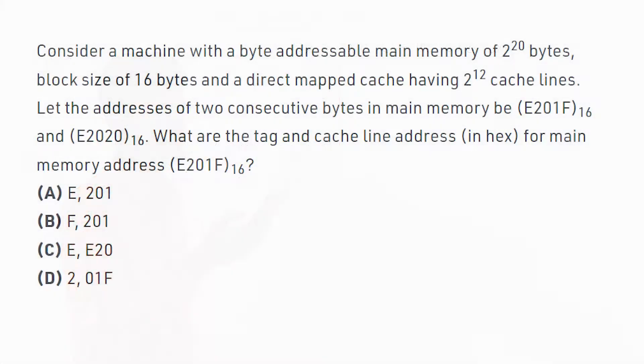Consider a machine with a byte addressable main memory of 2^20 bytes, block size of 16 bytes and a direct mapped cache having 2^12 cache lines. Let the addresses of two consecutive bytes in main memory be E201F base 16 and E2020 base 16.